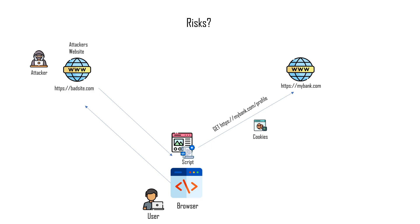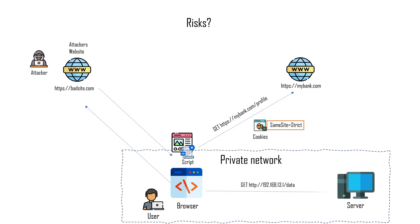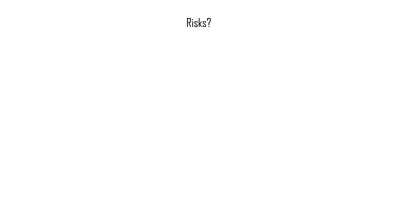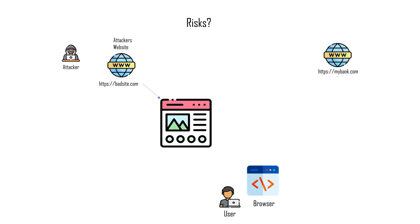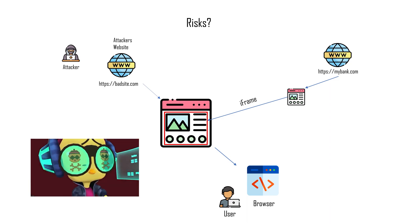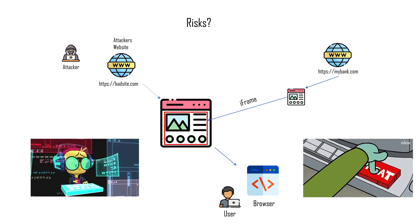Note that this might not be the case if the same-site cookie attribute is properly configured. The script might also retrieve data from the user's private network, which is a common case for a corporate setup. One more use case might be a user visiting an attacker's website which contains a banking application injected inside an iframe. In this scenario, the iframe can be not visible, or the user might just be thinking that he is using the banking application itself, without noticing the wrong URL. In both cases, the attacker's website has access to the application page content and might be able to programmatically do actions on behalf of the user.